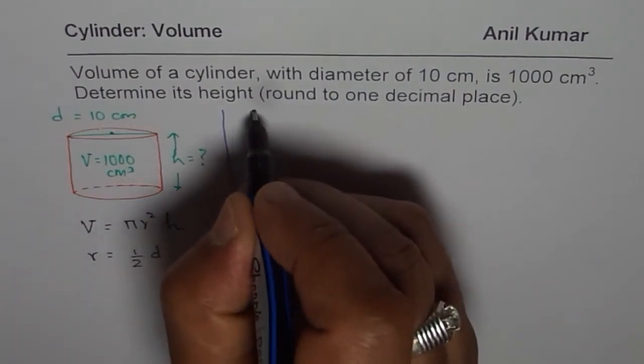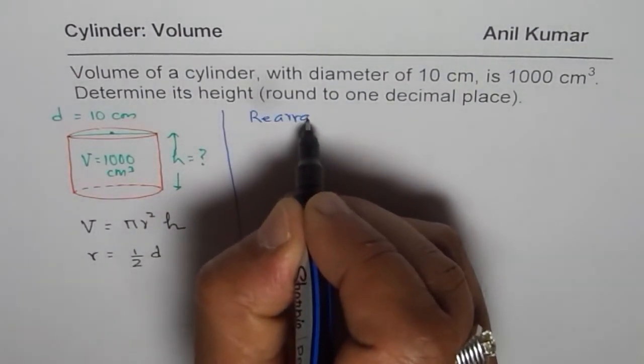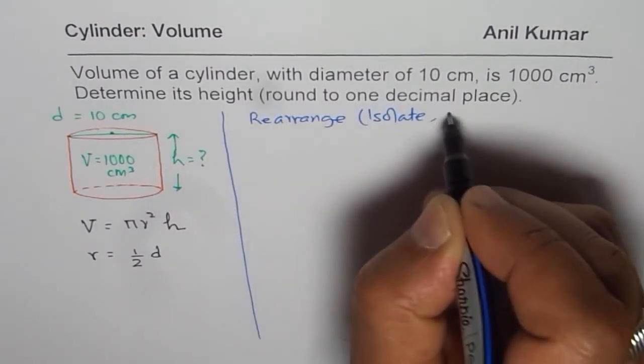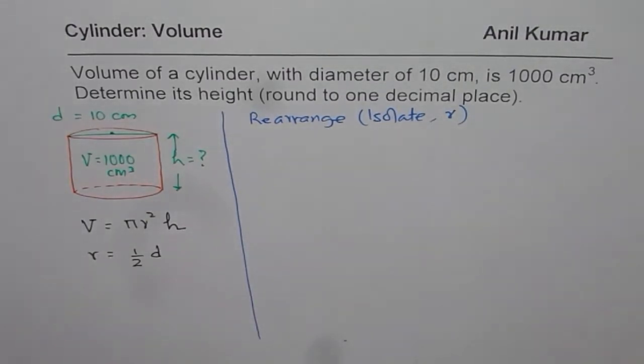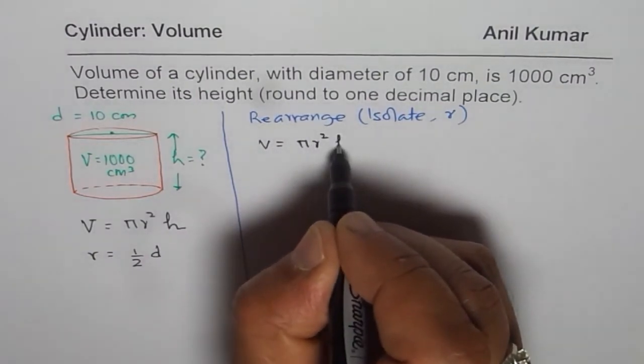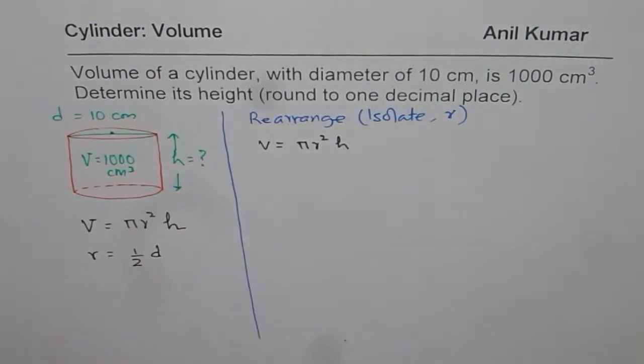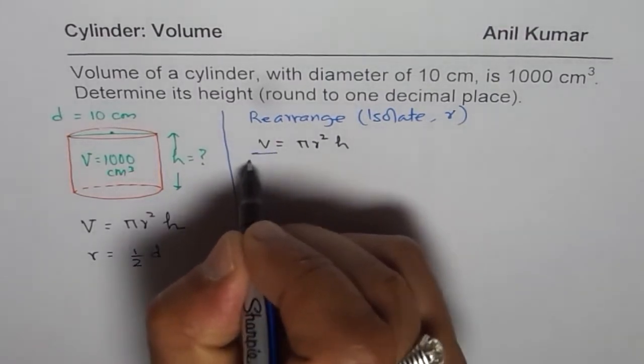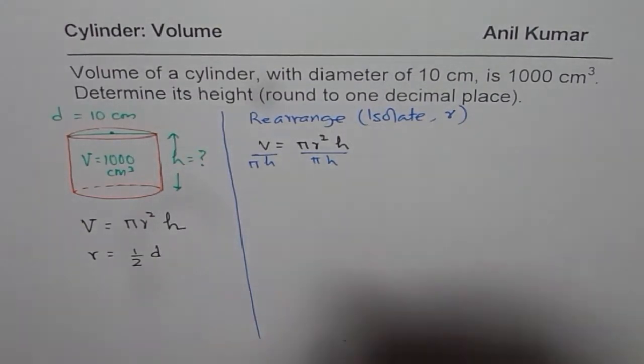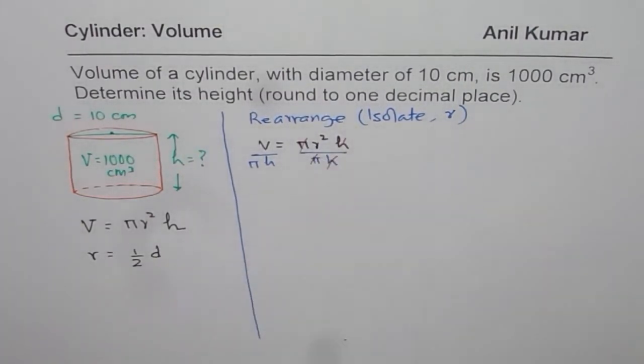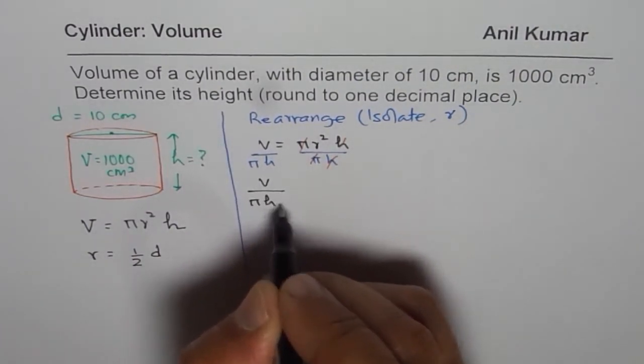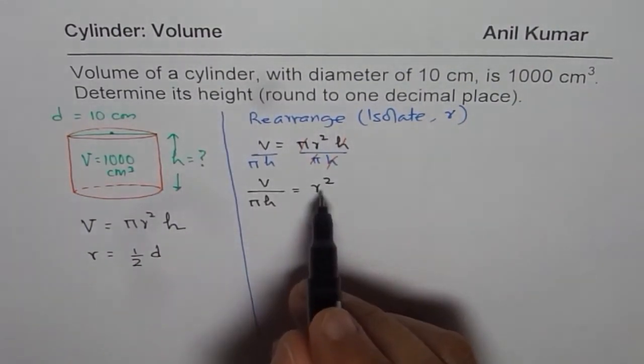So let us see how to rearrange a formula. We are given volume is πr²h. We know volume as πr²h. So we can divide both sides by π and h. So if you do that, then π and h cancels. You are left with r². So we get V/(πh) = r².